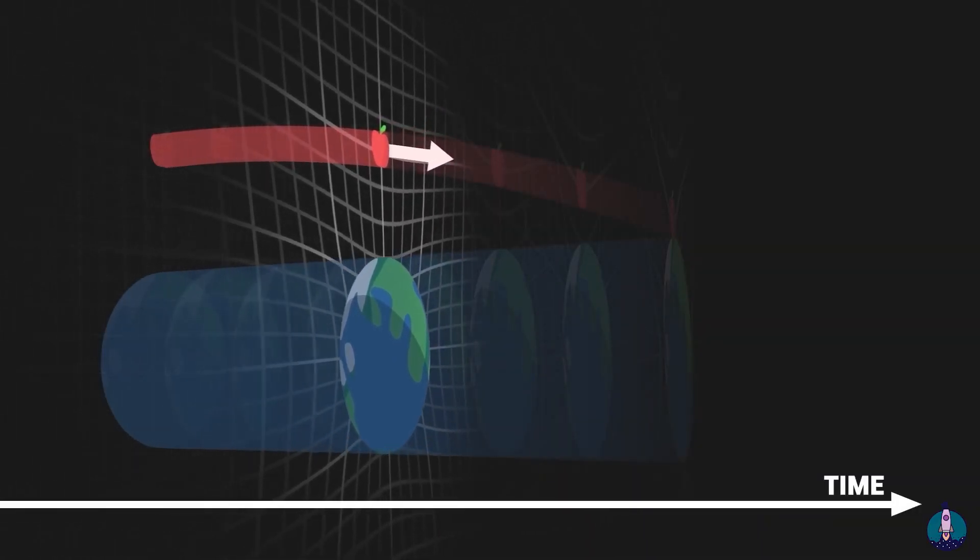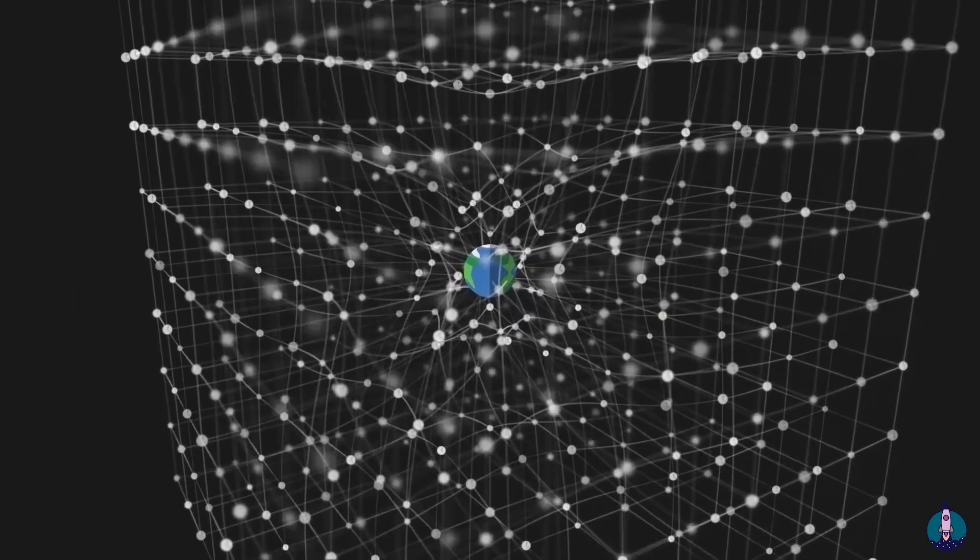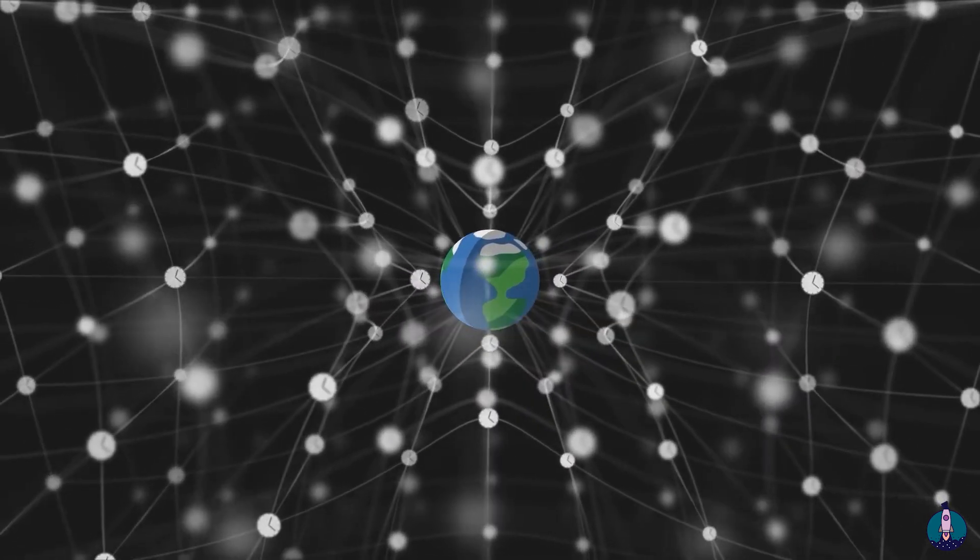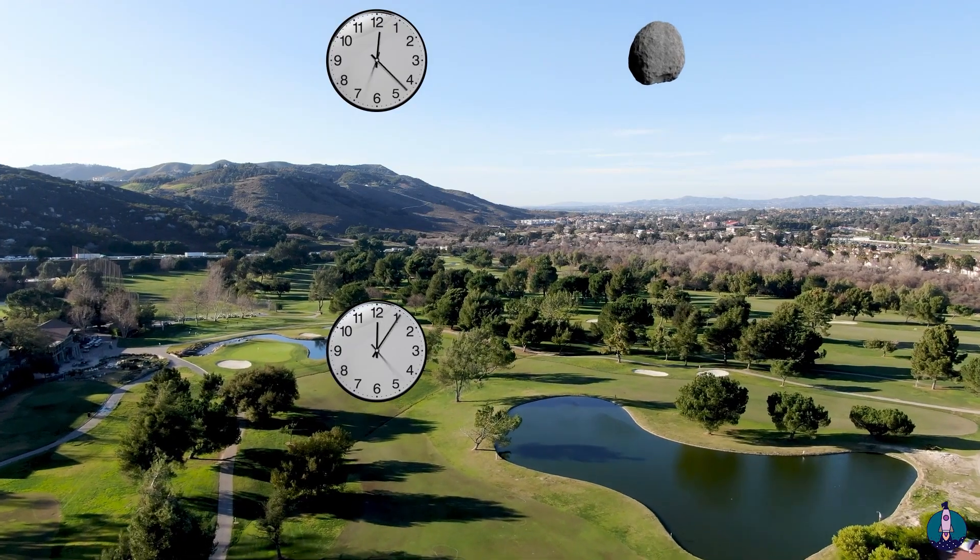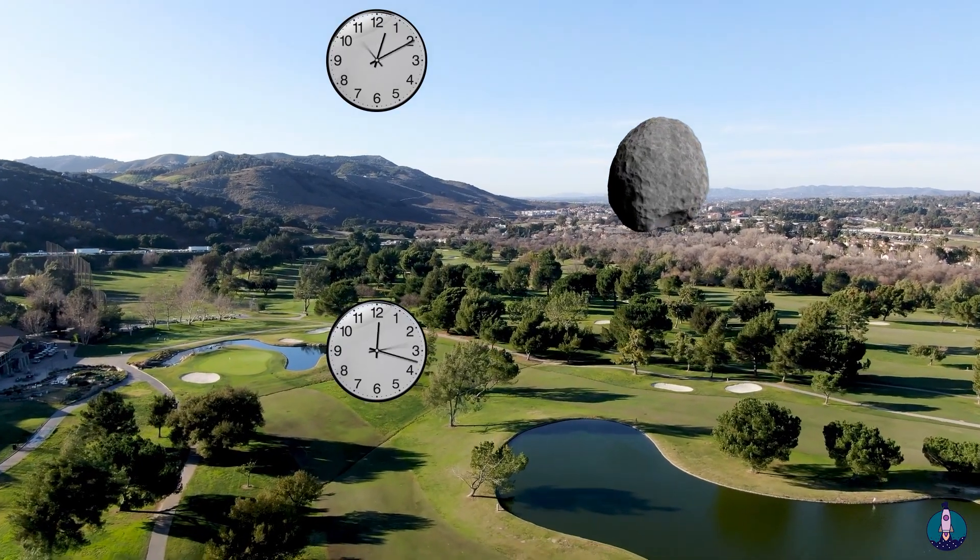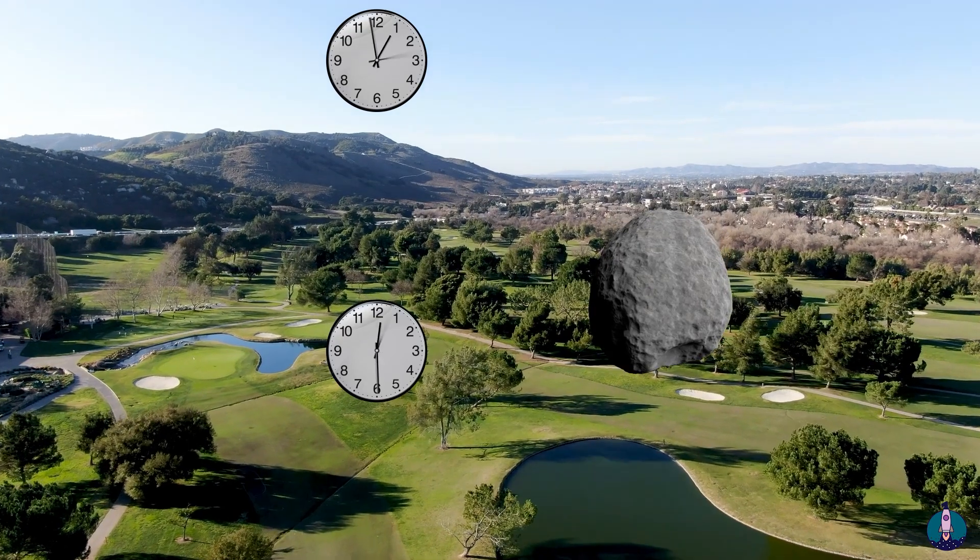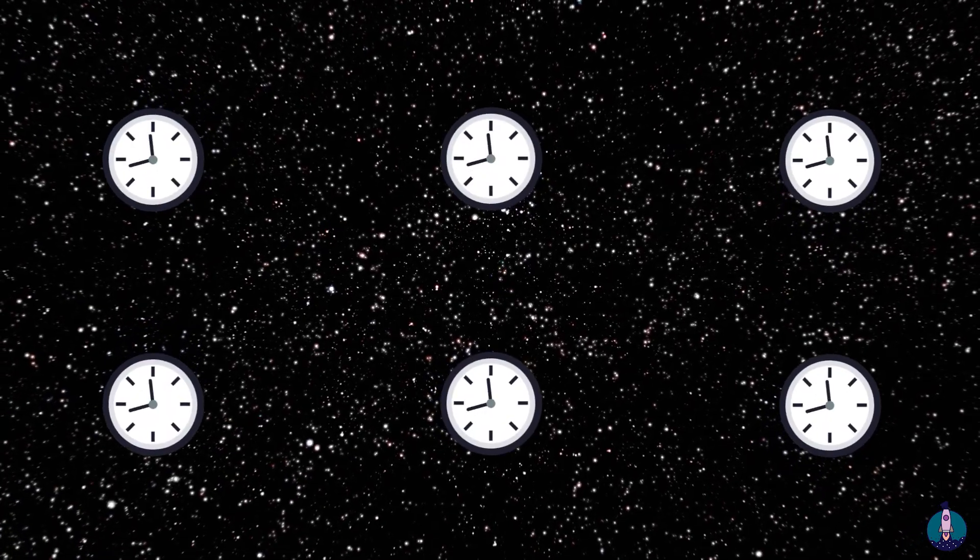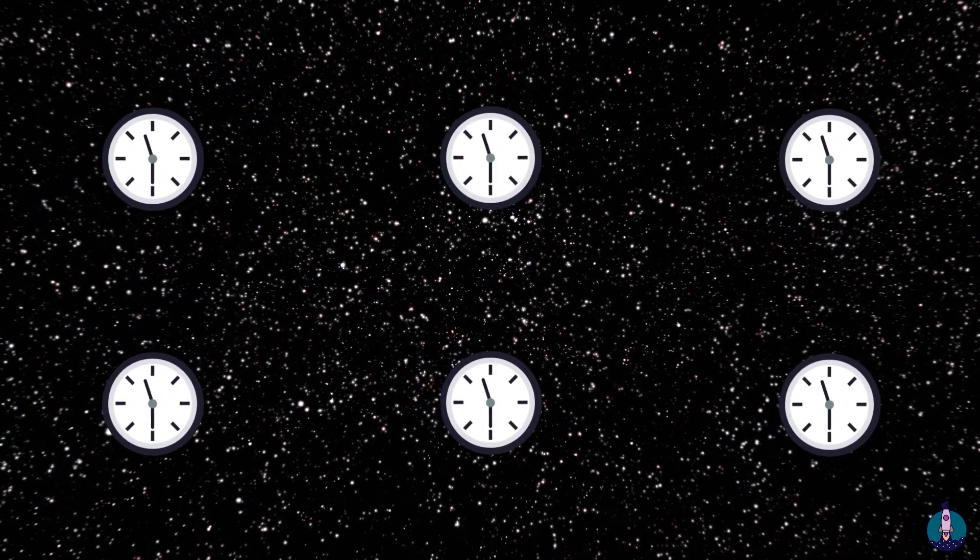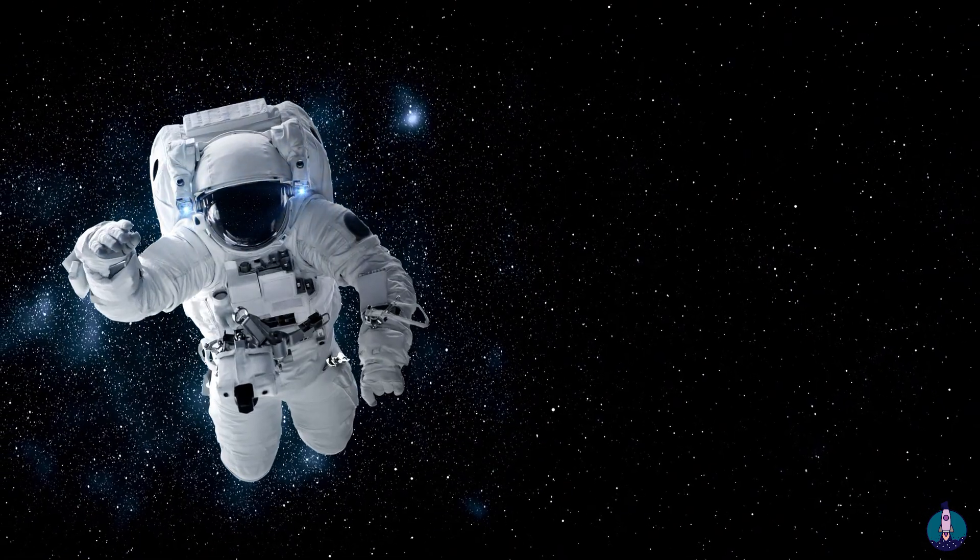This distortion of time influences movement. The earth, being massive, slows down time near it. Things fall towards the earth because they are drawn to areas where time runs slower. In space, where time flows more evenly, objects do not fall. They float.